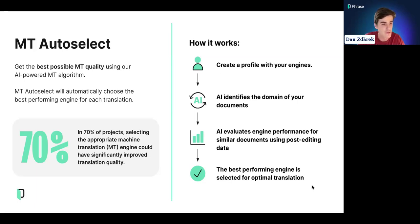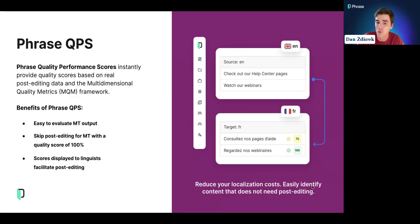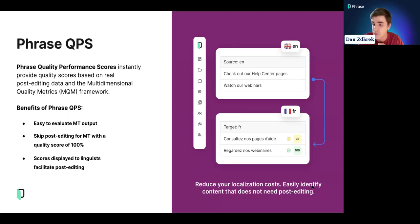The next feature, also AI-based and related to quality — this time measuring it — is Phrase QPS, which stands for Quality Performance Scores, introduced last December. QPS gives you an instant sense of translation quality at the segment level, using past performance data together with the multidimensional quality metric to generate scores. This makes it easy to evaluate quality immediately, allows dynamic workflows where you can skip post-editing for content that's good enough, and helps linguists speed up translations.